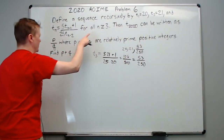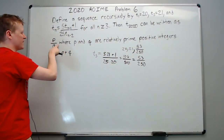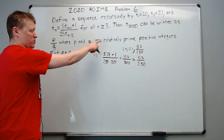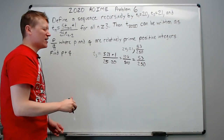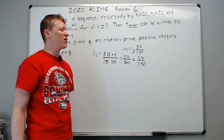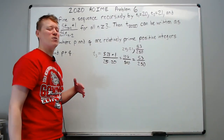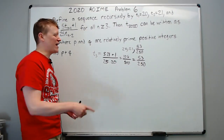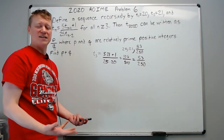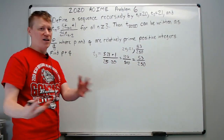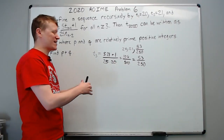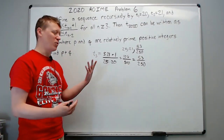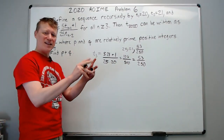The problem says t₂₀₂₀ can be written as a fraction p/q where p and q are relatively prime positive integers — find p + q. This is the third time on this test we've had this type of ending. Now, you might be thinking 2020 is so far away; how am I going to get there in time? You have to remind yourself: on recursion problems, typically a pattern will develop. Have faith, keep going, and you'll find it.